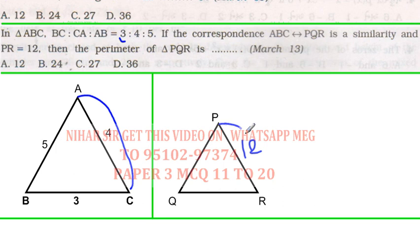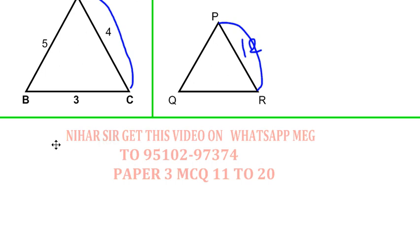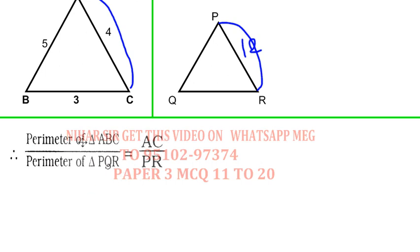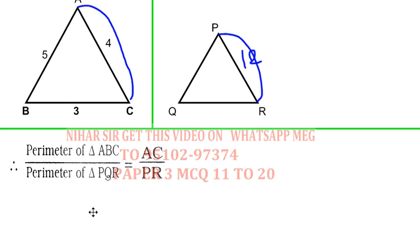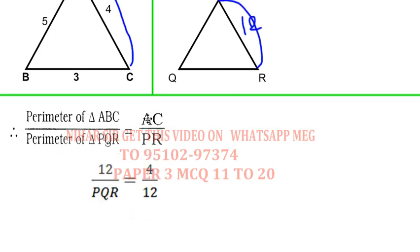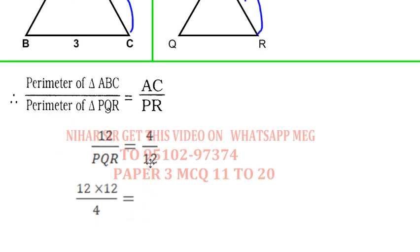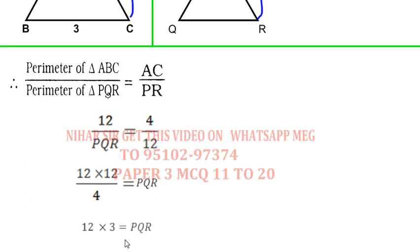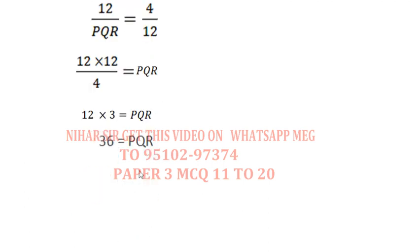I have to find perimeter, so perimeter of ABC over perimeter of PQR equals AC/PR. Perimeter of ABC is 5 + 4 + 3 = 12, and PQR I don't know. That's 4/12. Now 12 goes to the other side, 4 divides 12, that's 3 times 12, so my answer is 36.